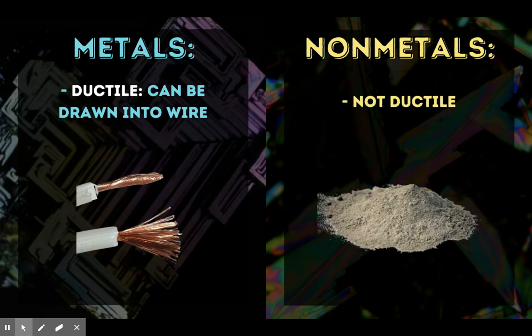Metals are ductile, which means they can be drawn into wire. And nonmetals are not ductile — so going back to them being brittle, if we try to form them into wire, they are just going to break.